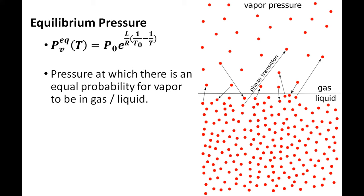This leads us to relative humidity — the pressure of water vapor relative to its equilibrium pressure. Now we understand that if the water vapor's pressure is equal to the equilibrium pressure, we will get condensation of water vapor. This is called the dew point.